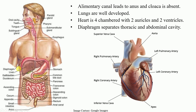The diaphragm separates the thoracic cavity from the abdominal cavity. In this diagram, the chest region is referred to as the thoracic cavity, while the abdominal region contains the abdominal cavity. This thoracic and abdominal cavity are separated by the diaphragm, which acts as a boundary. This is another characteristic feature.